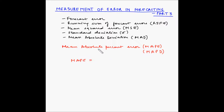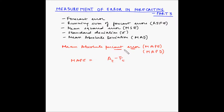MAPE is equal to — we will derive the formula based on this name. Starting from the end: first, error. As we have seen in forecast error, it is the difference between the actual demand for a certain time period and the forecast for that time period. So error is A_T minus F_T, where T is the time period, A stands for actual demand, and F stands for forecast. Next is percent.